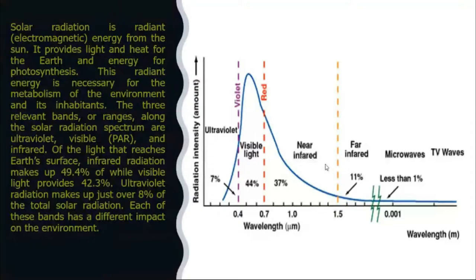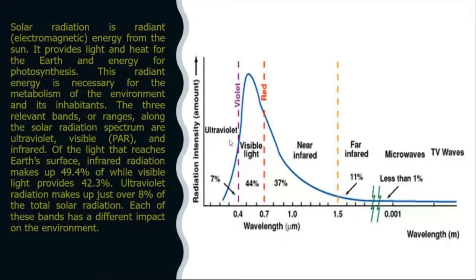The light that we see, called visible light or photosynthetically active radiation, is about 42 to 44% of the solar spectrum. Ultraviolet radiation is about 7 to 8%. At higher elevations the concentration of ultraviolet radiation is higher because pollution level is low, so its scattering is less.